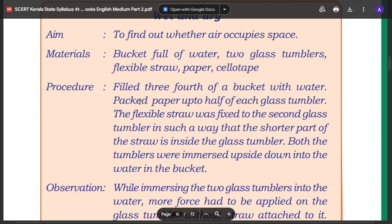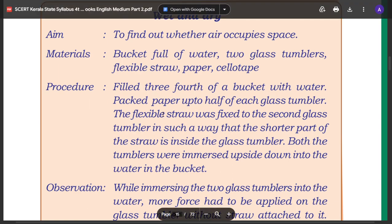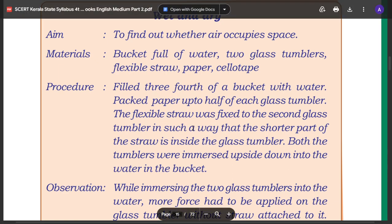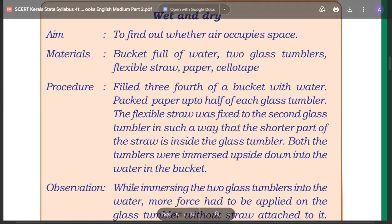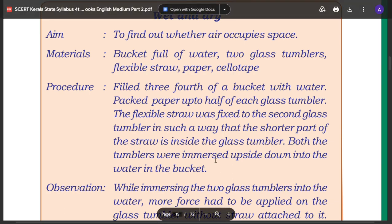Fill three-fourths of a bucket with water. Pack paper up to half of each glass tumbler. The flexible straw was fixed to the second glass tumbler in such a way that the shorter part of the straw is inside the glass tumbler. Both the tumblers were immersed upside down into the water in the bucket.